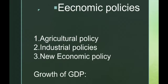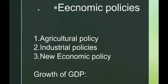Economic policies for the growth of GDP include agricultural policies, industrial policies, and new economic policies. Agricultural policy is the set of government decisions and actions relating to domestic agriculture and imports of foreign agriculture products. Its goal is achieving specific outcomes in domestic agricultural product markets. Some agricultural policies include price policy, land reform policy, green revolution, irrigation policy, food policy, agricultural labor policy, and cooperative policy.